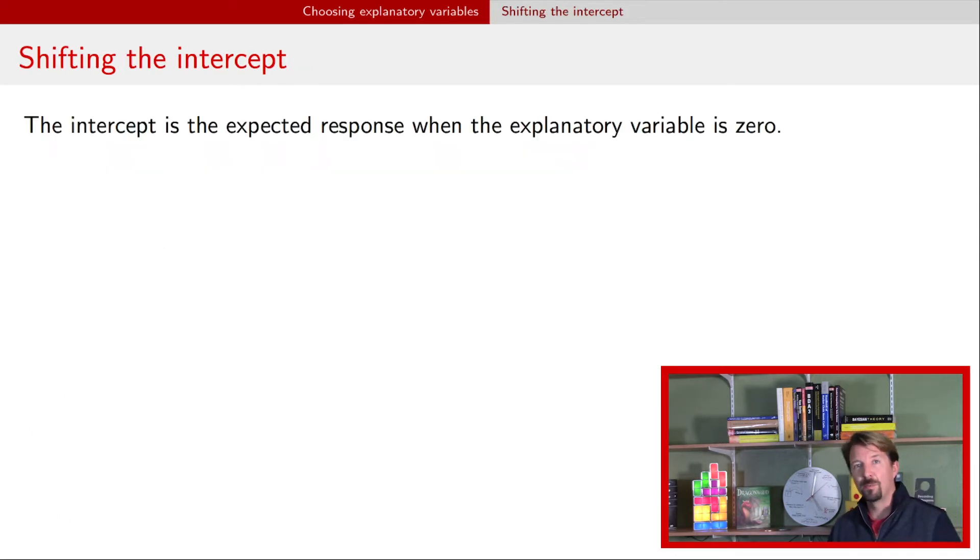Now let's talk about that x - m function. I'm going to refer to this as shifting the intercept. The reason is because you'll see in a moment that this function has the effect of changing the interpretation that you have for the intercept. As a reminder, the intercept is the expected response when the explanatory variable is zero. And so if we decide to use the function x - m as the input into our regression model, then what we actually have as an interpretation for that intercept is what the expected response is when the explanatory variable is m. Because if we plug in m for x in this equation, then we have m - m, that's zero.